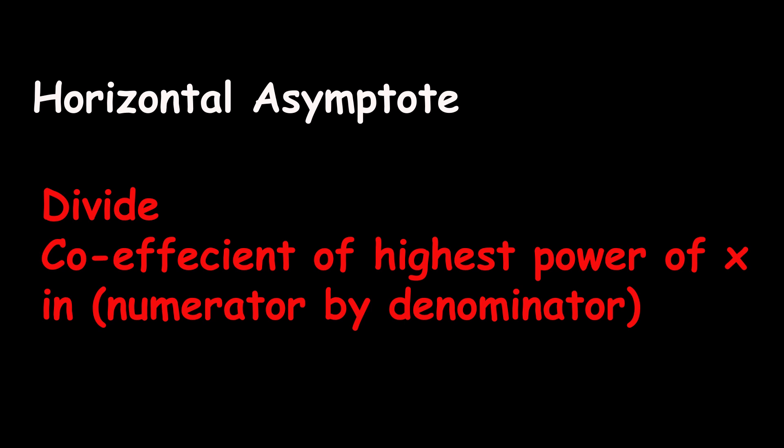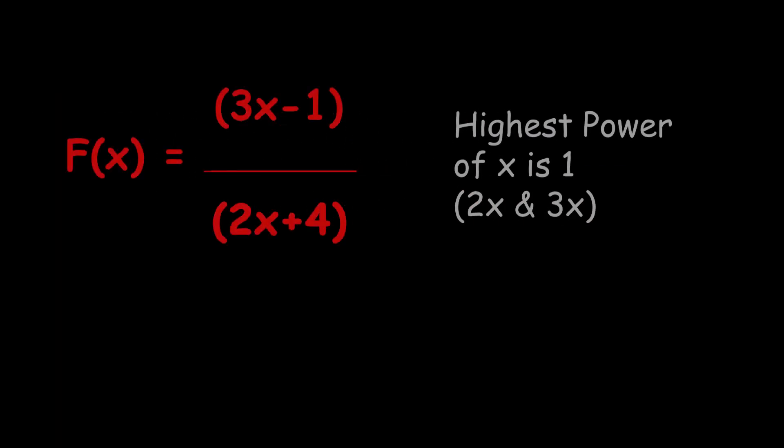Here the highest power of x is 1, so what we'll simply do is divide 3x by 2x, and this gives us 3 by 2. This 3/2, or you can say y = 3/2, is the horizontal asymptote for f(x).